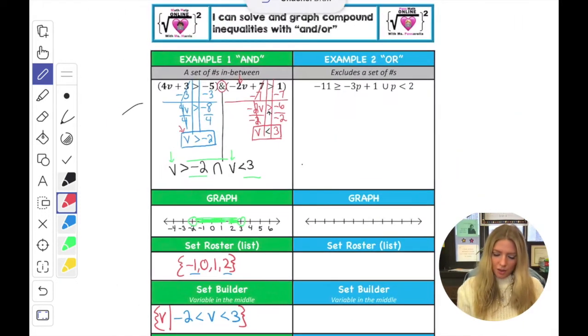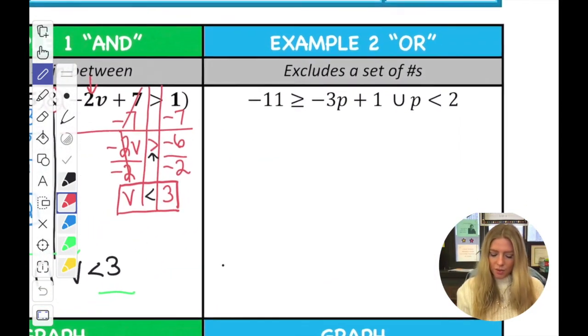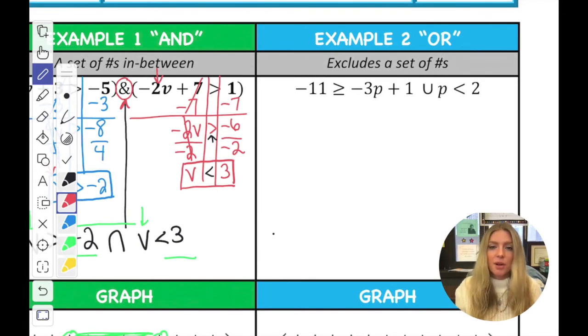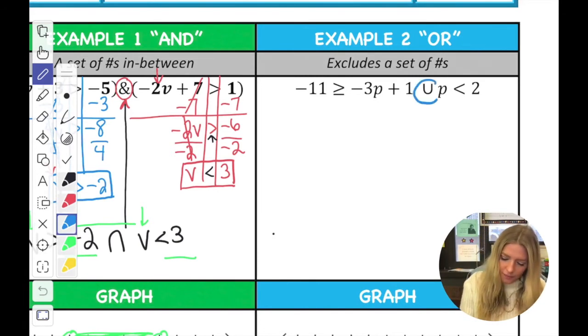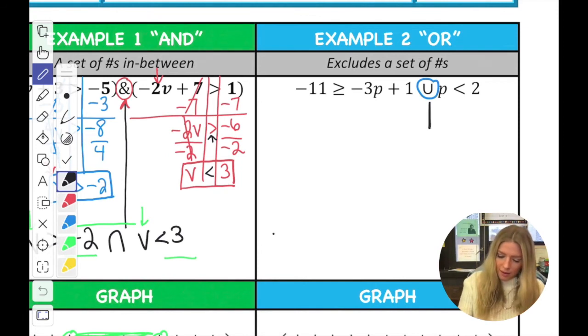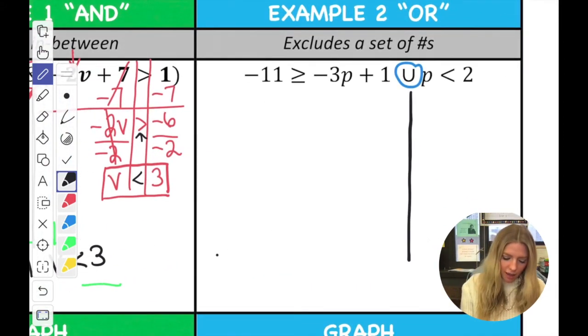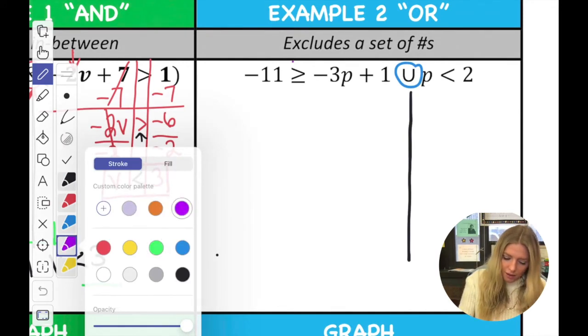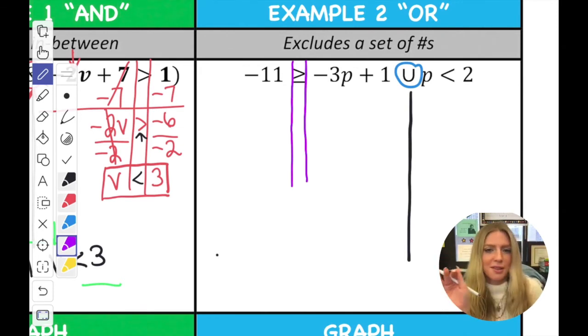All right, question two. Okay, so in this situation, instead of the word and or something like this, we have the actual mathematical symbol of or, which looks like a U right here. So I like to split it at the symbol so I can just make sure I'm treating them separately, and now I'm just going to start solving my inequalities.